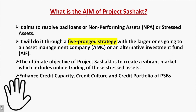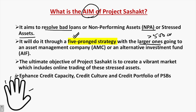What exactly is the aim of this project? The purpose is to resolve bad loans, non-performing loans, non-performing assets, or stressed assets. It is going to do this through a five-pronged strategy, with larger non-performing loans of more than 500 crores going to an asset management company or an alternative investment fund. The ultimate objective of the project is to create a vibrant market which includes online trading of stressed assets.